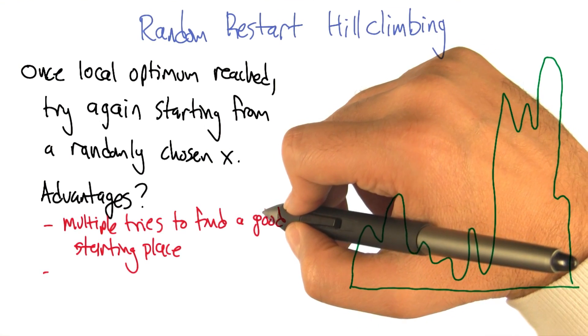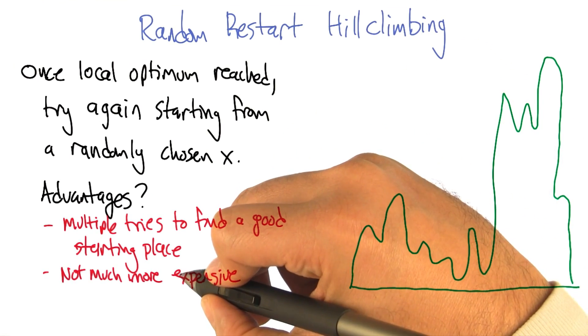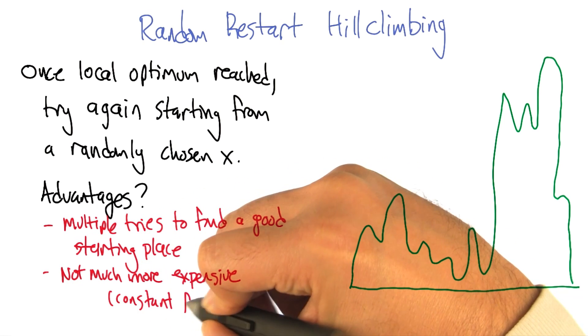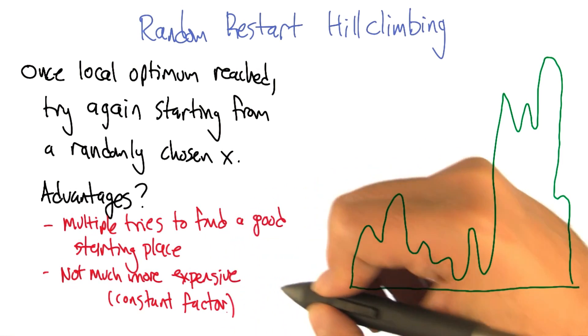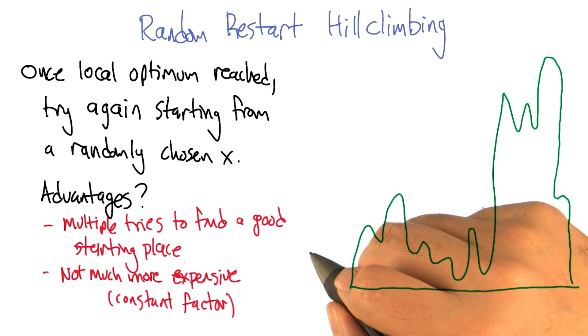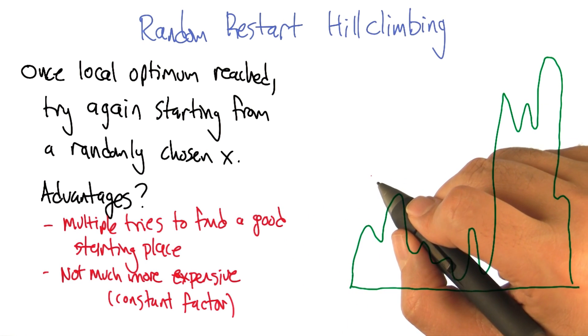Another advantage is that it's actually not much more expensive. Whatever the cost is of climbing up a hill, all you've done is multiply it by a constant factor, which is how many times you're willing to do a random restart. It's really just random hill climbing repeated however many times you feel like you have time to repeat it. And it can actually do much, much better.